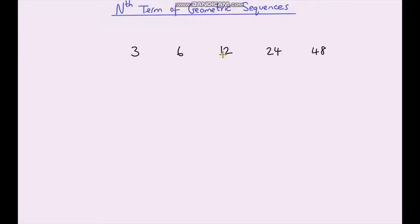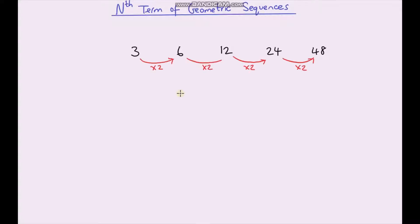Hello and welcome to another video on sequences. In this video we'll be looking at geometric sequences and calculating the nth term of a geometric sequence. A geometric sequence is a sequence in which each consecutive term is being multiplied by the same number. We can see that to go from one term to the next we're multiplying by two, and we would call this our common ratio. So for this sequence our common ratio is two.